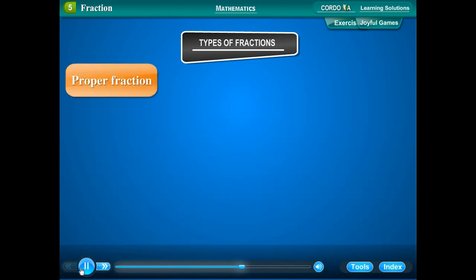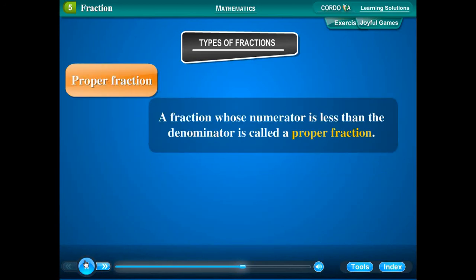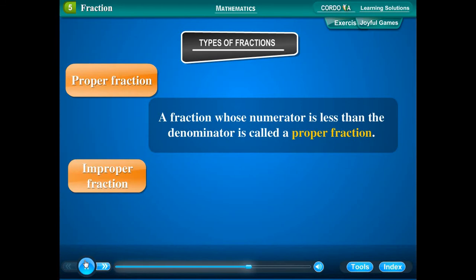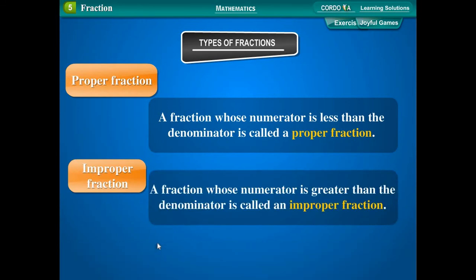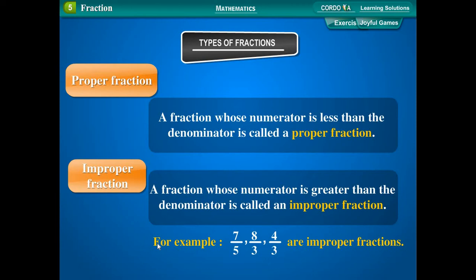Proper fraction: A fraction whose numerator is less than the denominator is called a proper fraction. For example, 5 upon 7, 3 upon 5, and 1 upon 3 are proper fractions. Improper fraction: A fraction whose numerator is greater than the denominator is called an improper fraction. For example, 7 upon 5, 8 upon 3, and 4 upon 3 are improper fractions.